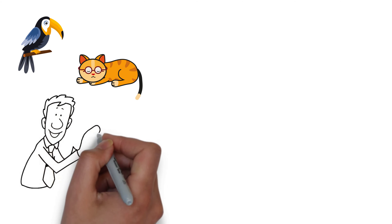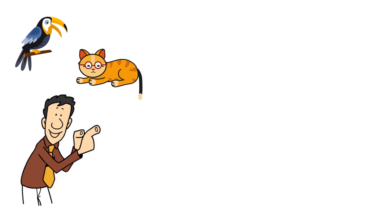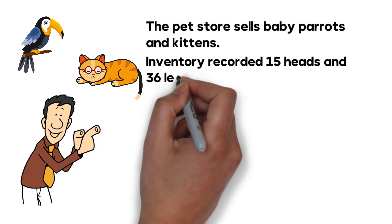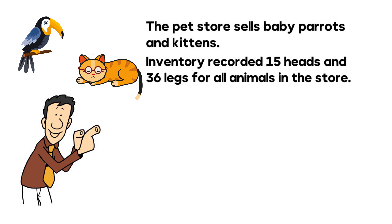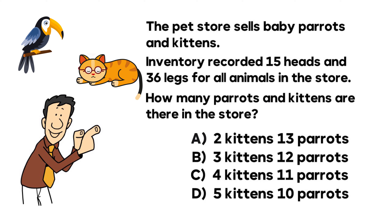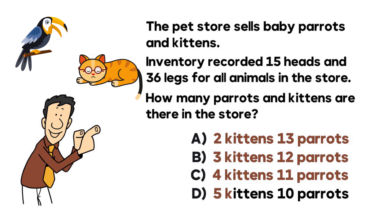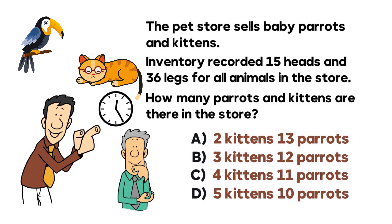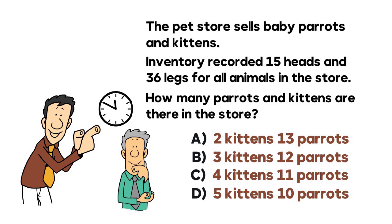Here is an excellent question — variations of which we very frequently see on the test. A pet store sells baby parrots and kittens. Inventory recorded 15 heads and 36 legs for all animals in the store. How many parrots and kittens are there? Choices are: A) 2 kittens and 13 parrots, B) 3 kittens and 12 parrots, C) 4 kittens and 11 parrots, D) 5 kittens and 10 parrots. Give yourself 10 to 30 seconds.